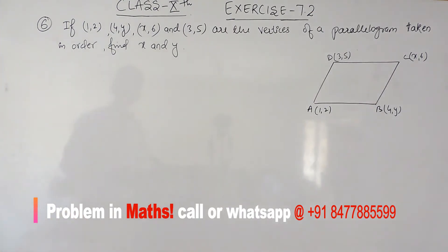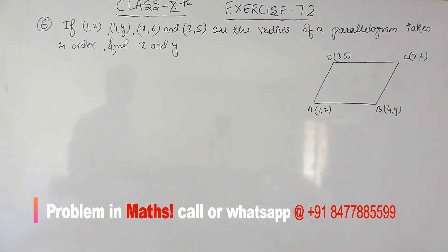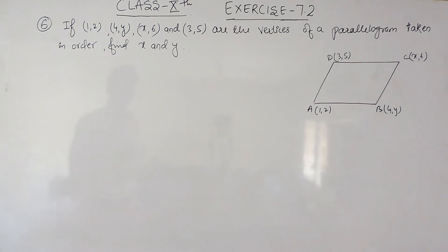The question says: if (1,2), (4,y), (x,6) and (3,5) are the vertices of a parallelogram taken in order, you have to find x and y.